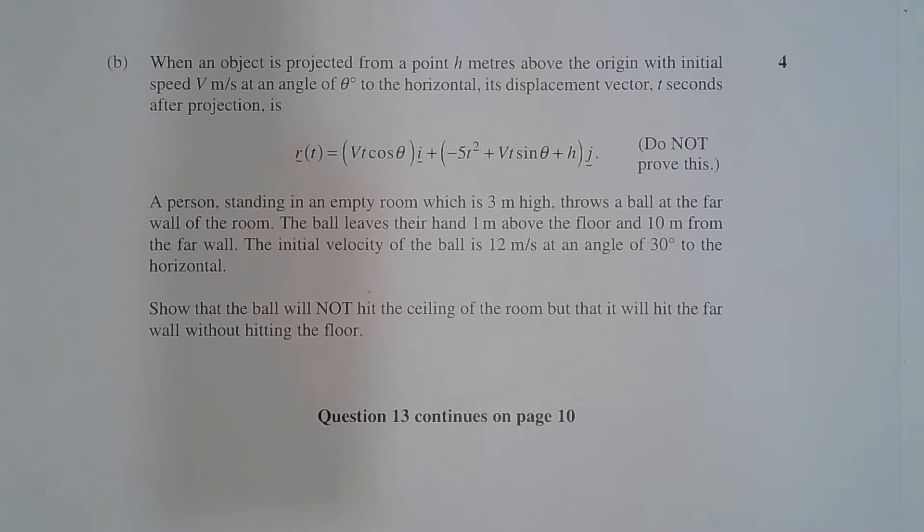A person standing in an empty room which is 3 meters high throws a ball at the far wall of the room. The ball leaves their hand 1 meter above the floor and 10 meters from the far wall. The initial velocity of the ball is 12 meters per second at an angle of 30 degrees to the horizontal. Show that the ball will not hit the ceiling of the room, but that it will hit the far wall without hitting the floor.